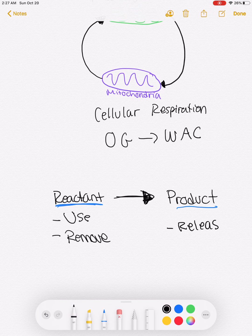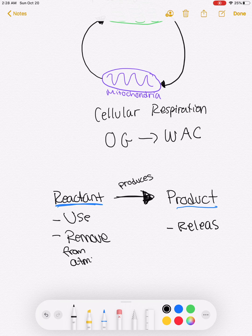The arrow simply means 'produces.' Also, if you see the word 'use' or 'remove from atmosphere,' that is referring to a reactant of a chemical equation. If you see the word 'release,' that means it is referring to a product of a chemical equation.